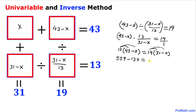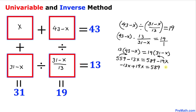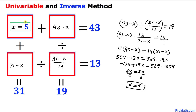Moving 559 to the right and negative 19x to the left: negative 13x plus 19x equals 589 minus 559, which gives 6x equals 30. Dividing both sides by 6, x equals 5. So the value in the first box is 5.